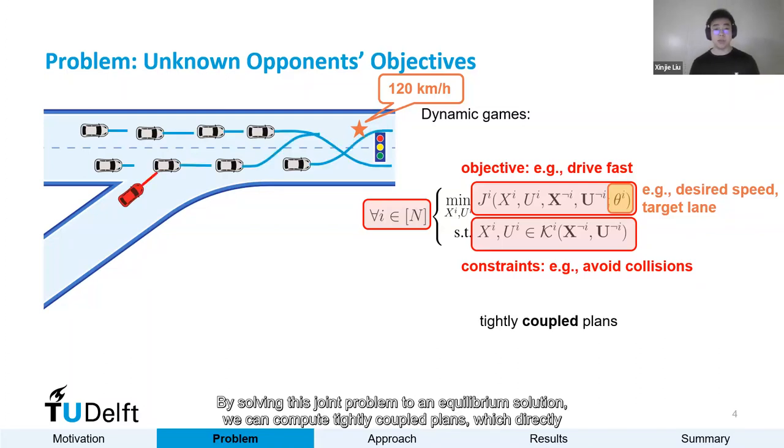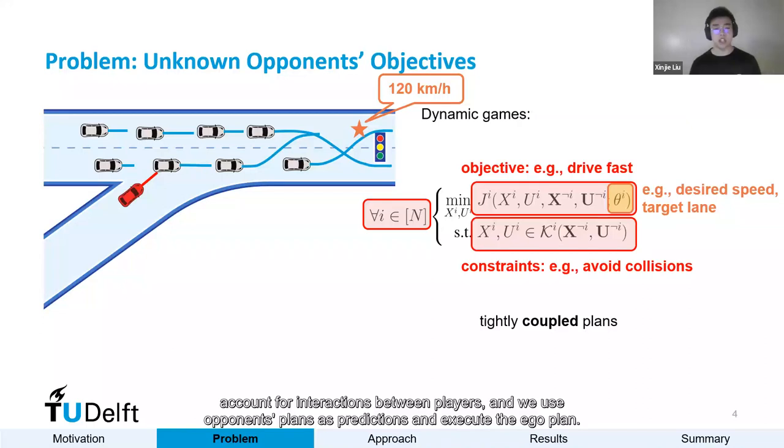By solving this game problem to an equilibrium solution, we can compute tightly coupled plans which directly account for interactions between players, and we use opponents' plans as predictions and execute the ego plan.